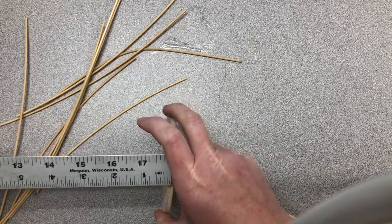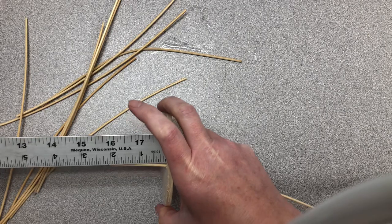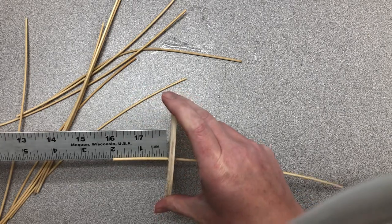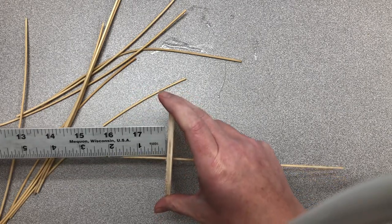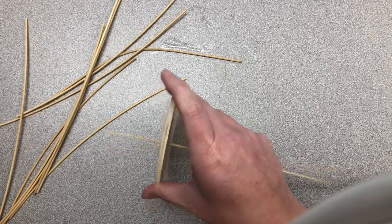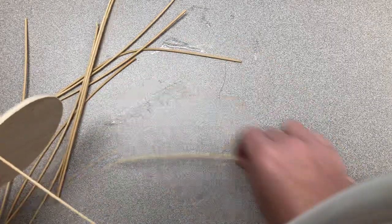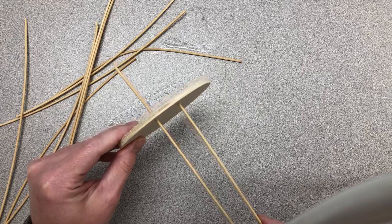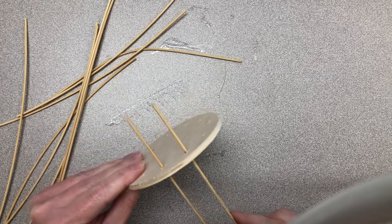You have to do this quickly because you don't want your basket weaving material to dry out. It should be wet when you're using it otherwise it's just going to break. So I'm going to go ahead and put the rest of these through. I've measured my first one.